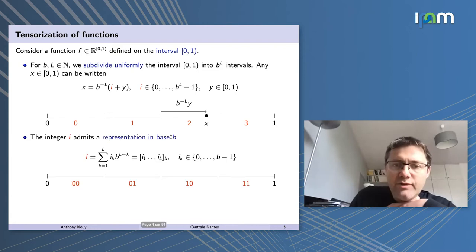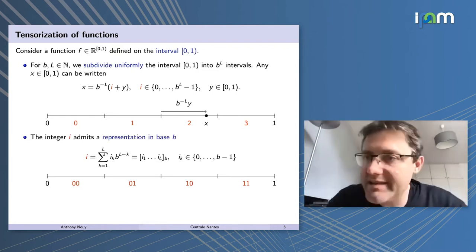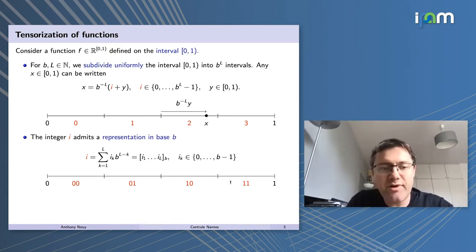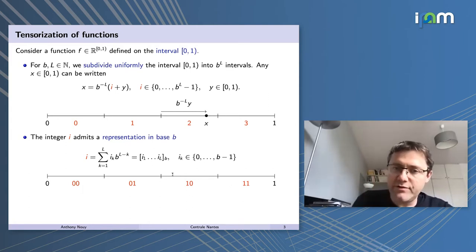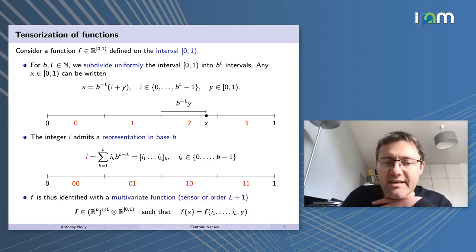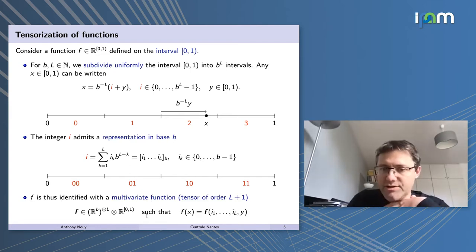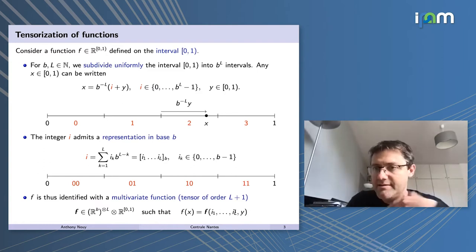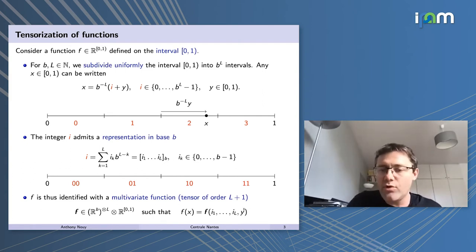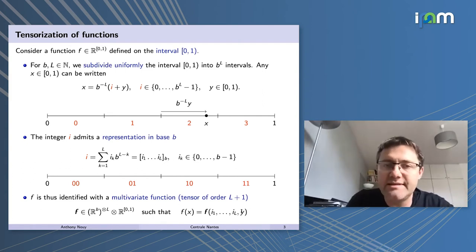Your integer can be represented in base B. So you have a representation of your integer in base B — here is an illustration with a binary encoding. After this encoding of your variable X, you end up with an identification of a univariate function with a multivariate function, depending on some digits taking values zero until B minus one, and a local variable Y taking values in zero, one.